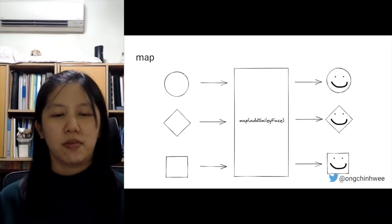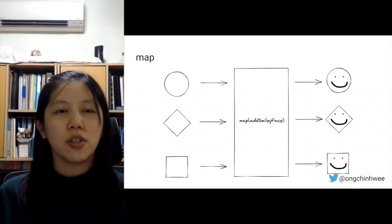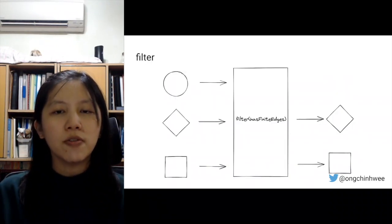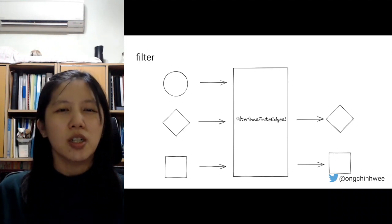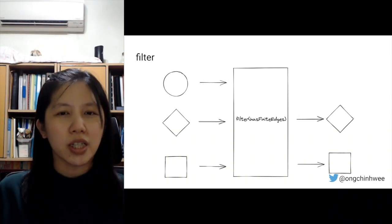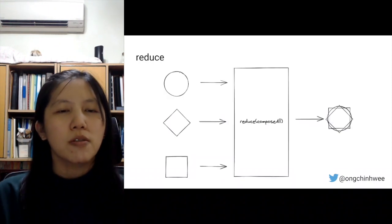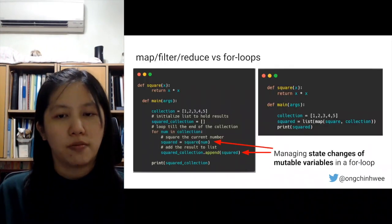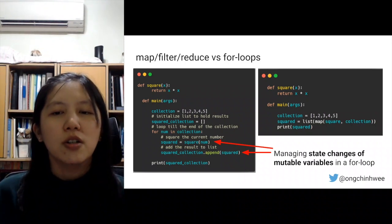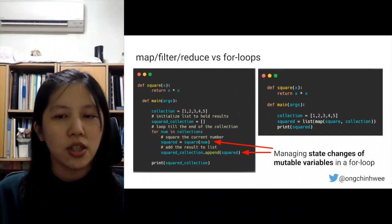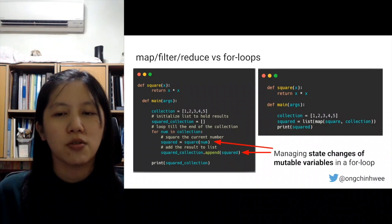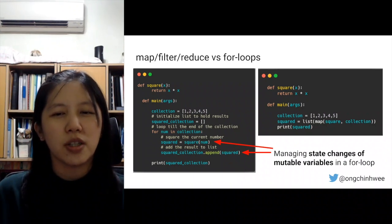The three most commonly used higher-order functions in functional programming are: map, which maps a transformation to shapes; filter, which filters objects that fulfill a certain predicate involving true/false evaluation; and reduce, which composes inputs into a single output. Comparing map/filter/reduce versus for loops, in a for loop we are managing state changes of variables, but with map/filter/reduce we don't have to manage those state changes — it's more straightforward.